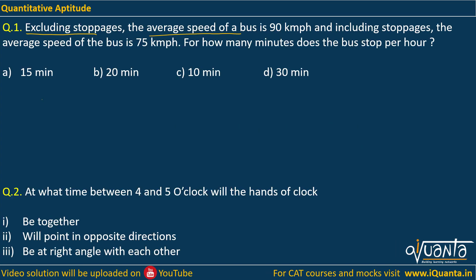Excluding stoppages, the average speed of a bus is 90 kilometers per hour, and including stoppages, the average speed of the bus is 75 kilometers per hour. For how many minutes does the bus stop per hour? We can